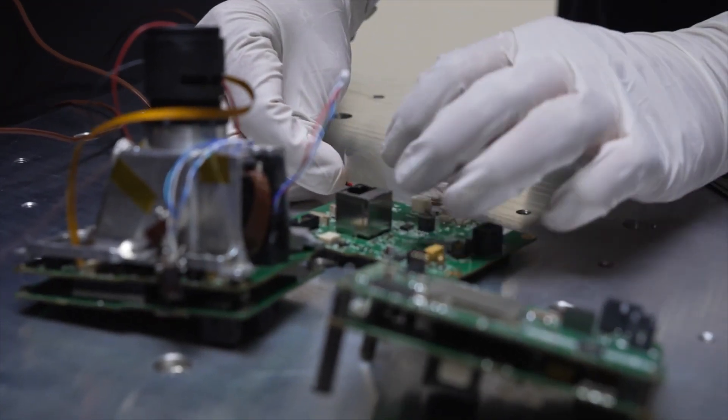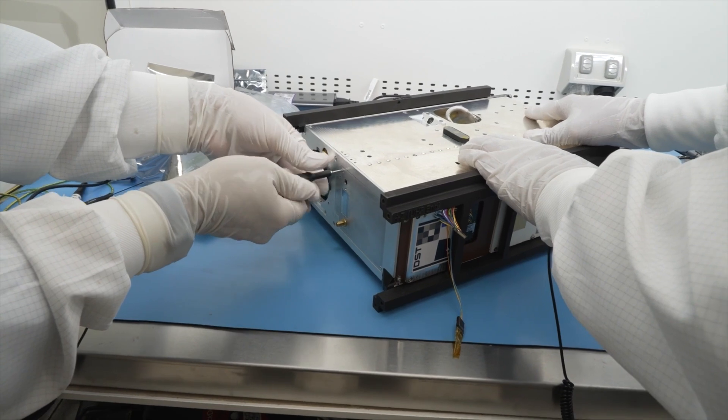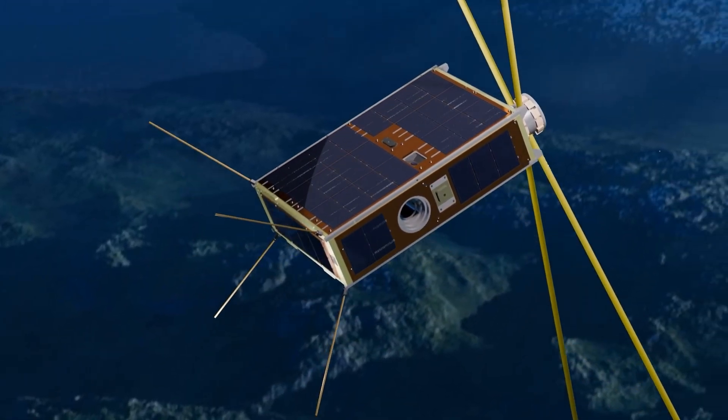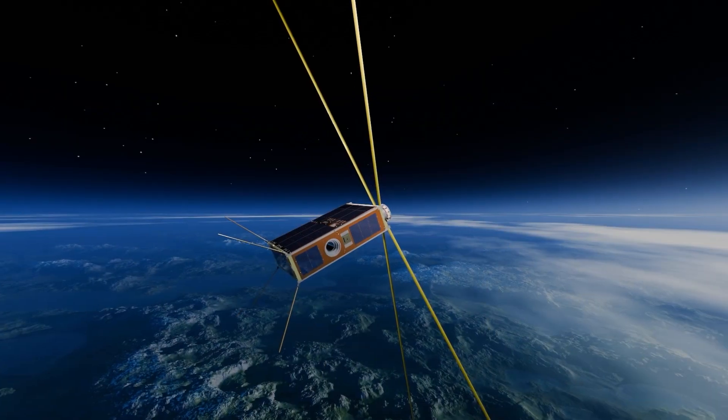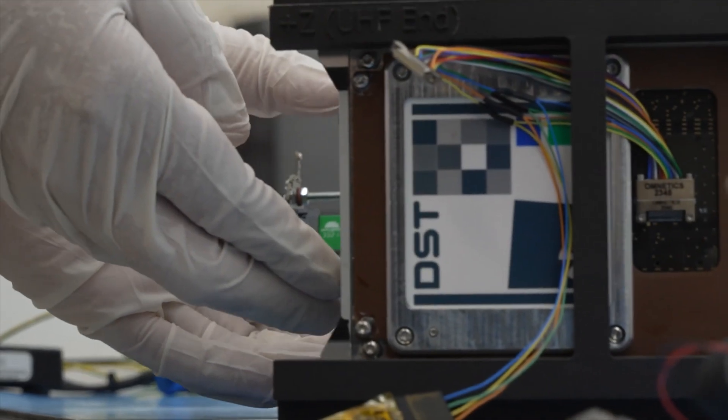DSDG designed the ground station system, as well as the two payloads that go into that spacecraft. For the primary payload it was DSDG, and then for the secondary payload it was DSDG with UniSA. The bus itself, which is everything that's not the scientific payloads, was provided by Innovore Technologies. They designed the spacecraft itself and then provided that bus to us.